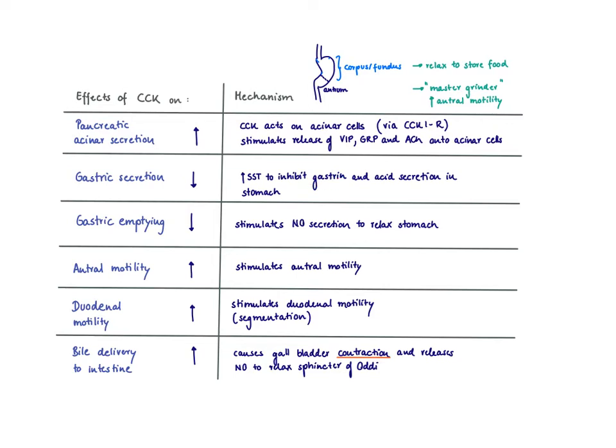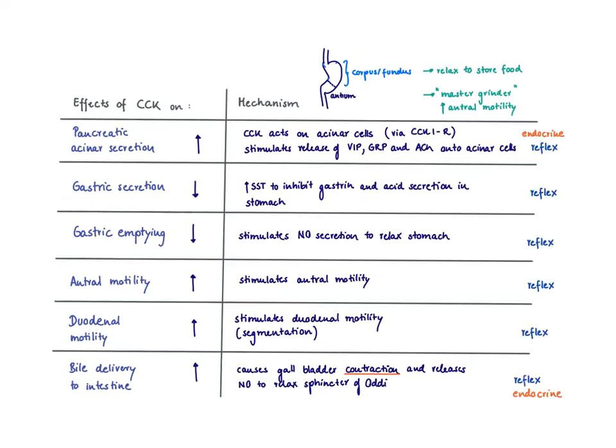It relaxes the stomach and therefore decreases gastric emptying by stimulating NO secretion and then via a lot of afferent reflexes stimulates the different motility patterns in the antrum, in the duodenum, causes gallbladder contraction, and in order to release the bile, you need to also relax the sphincter of Oddi so that the bile can reach the duodenum.